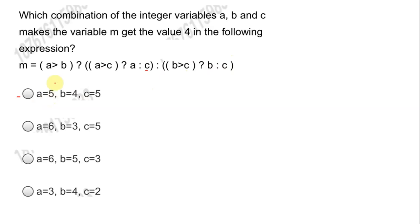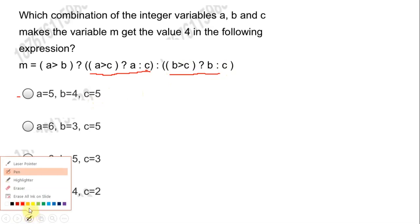Let us try option 1: a=5, b=4, c=5. If a is greater than b — 5 is greater than 4, true — we check if a is greater than c, but 5 is not greater than 5, so that condition is false. Then we check if b is greater than c — b is 4 and c is 5 — that is also false, so it returns c which is 5. So option A is wrong.